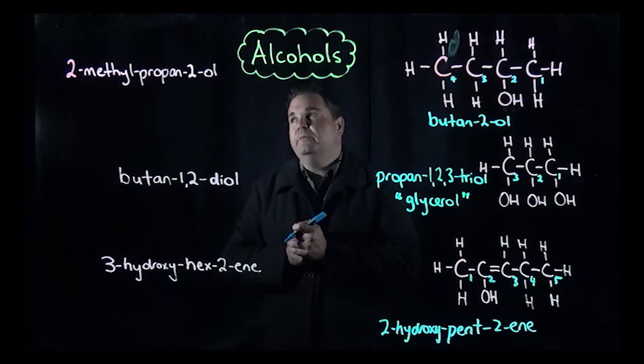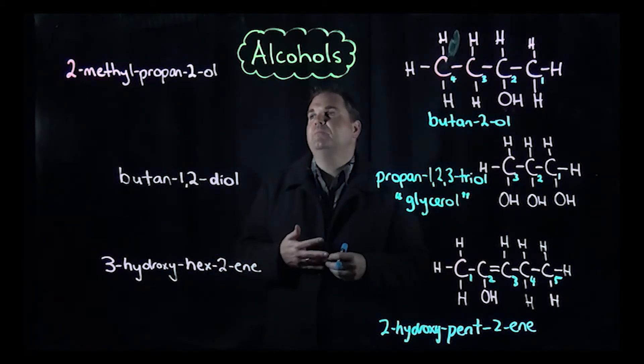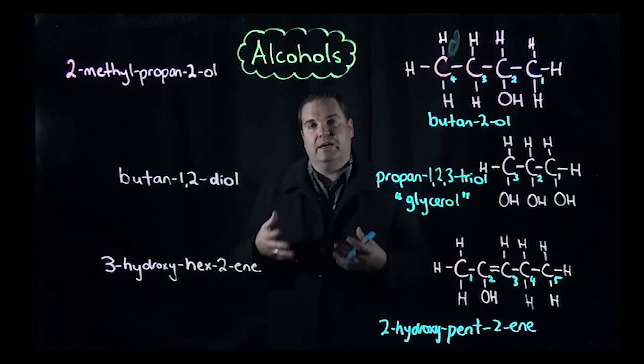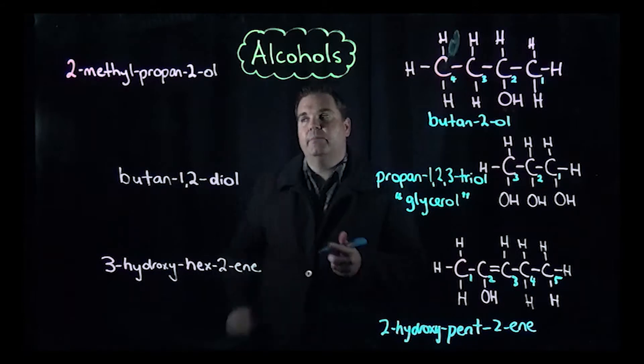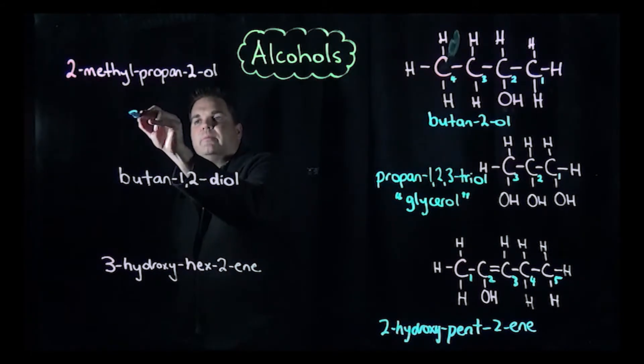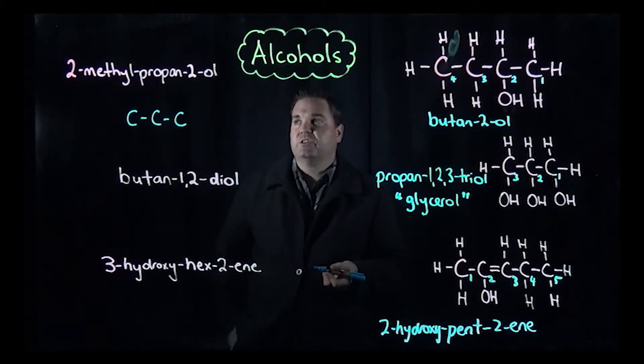Conversely, if we then go to draw them, we follow the same rules as the previous video. The easy thing to do is always start with your carbon chain. We've got propan-2-ol, so we want three carbon atoms. Just draw out your three carbon atoms as your skeleton, then start looking at your functional groups and side chains.